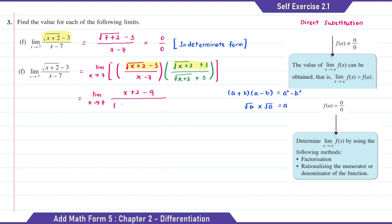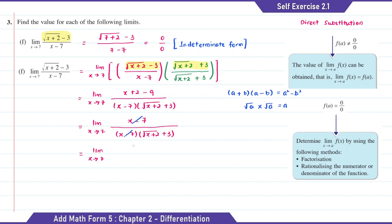So for the numerator part, the answer will be (x plus 2) minus 3 squared which is 9. For the denominator, we're going to leave it as (x minus 7)(square root of x plus 2 plus 3). So the answer for the numerator will be x minus 7. So now we can cancel the x minus 7. Then what's left will be 1 over (square root of x plus 2 plus 3). So now substituting x with 7, the answer will equal to 1 over 6.